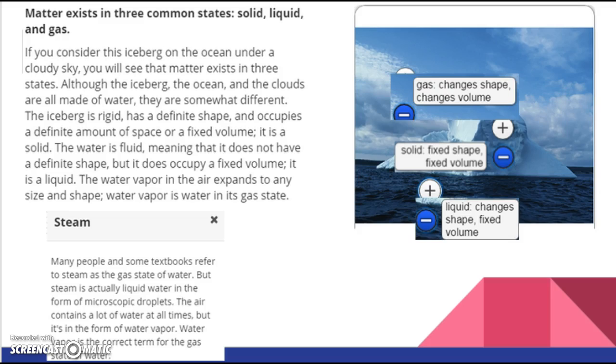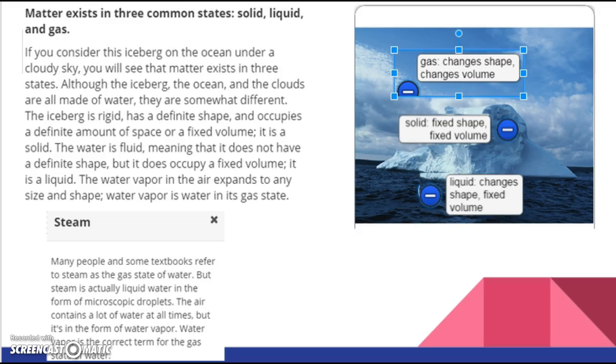Matter exists in three common states. Solid, liquid, and gas. If you consider this iceberg on the ocean under a cloudy sky, you will see that matter exists in three states. Although the iceberg, the ocean, and the clouds are all made of water, they are somewhat different. Now, water is like the ultimate example for so many things in chemistry. One of the reasons is because of the way it behaves. Another reason is everyone is familiar with water. And there aren't a lot of materials on Earth where you naturally have them as solid, liquid, and gas all together. So, again, liquid, water, the stuff we drink. Water that is a solid is, of course, called ice.